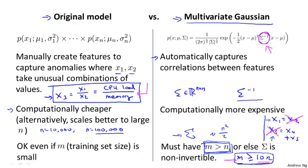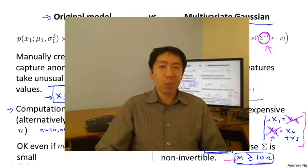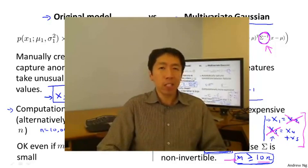For those who are experts in linear algebra: by redundant features, I mean the formal term is features that are linearly dependent. In practice, if you just make your features non-redundant, that solves the problem of sigma being non-invertible. The odds of running into this at all are pretty low, so you can usually apply the multivariate Gaussian model without worrying about sigma being non-invertible, so long as m is greater than or equal to n. That's it for anomaly detection with the multivariate Gaussian distribution. Applying this method, you'll have an anomaly detection algorithm that automatically captures positive and negative correlations between features and flags anomalies when it sees unusual combinations of feature values.